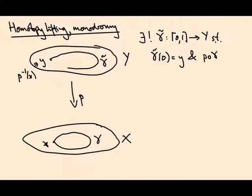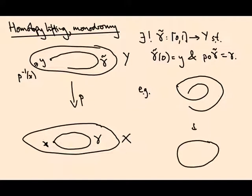So the projection of gamma tilde is gamma. Now, if I start with a loop gamma downstairs, there's no guarantee the path upstairs has to be a loop. We saw examples, for example, this covering space of the circle, it's a two-to-one map.